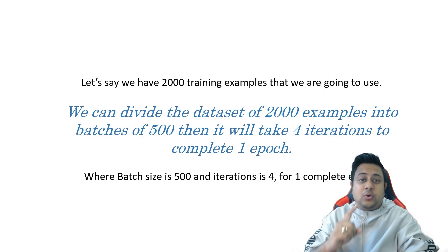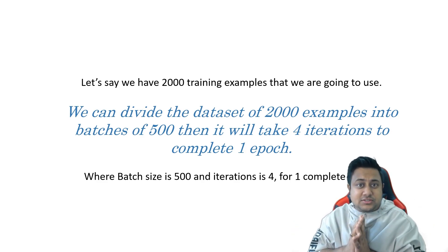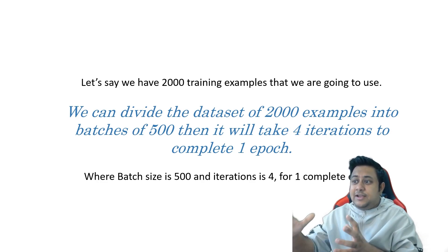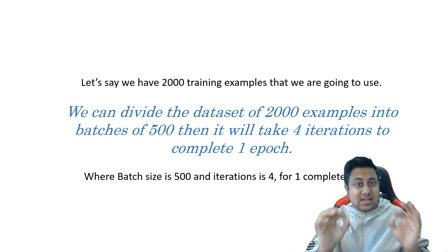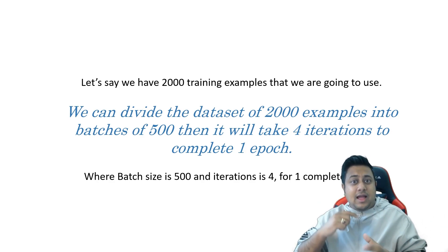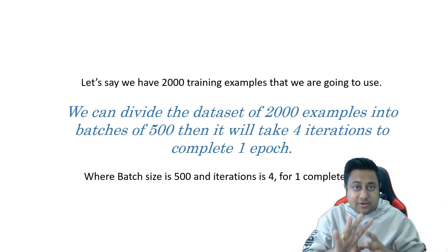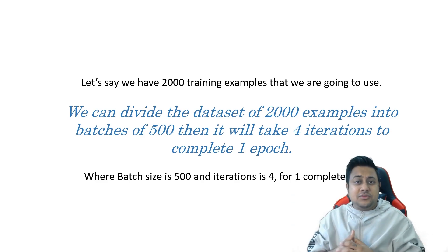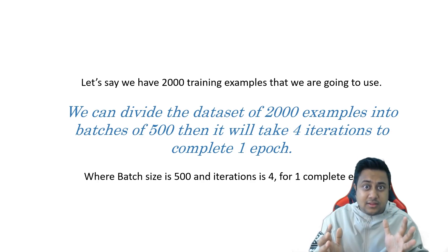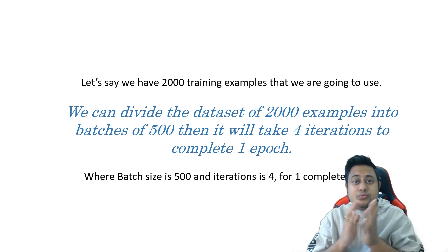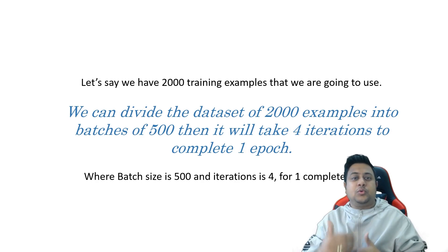Let's say we have 2000 training examples or 2000 images that we are going to use. We can divide the dataset of 2000 examples into batches of 500, so my batch size is 500. How many iterations are required to complete one full training data? Four iterations. So there will be four iterations to complete one epoch. Now just imagine if you are defining your epoch value as 100 - that means how many total iterations? 4 multiplied with 100, which is 400. So 400 times your weights will be updated in your neural network.